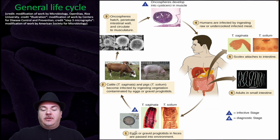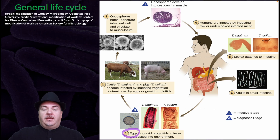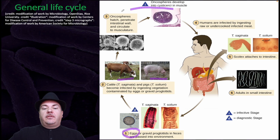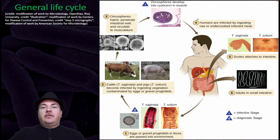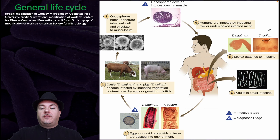Here's an example of a general life cycle. Released in the feces, you can have eggs. These eggs then infect the intermediate or secondary host, such as cows or pigs. In these intermediate hosts, you have development of the larval stages. Then you have infection of the definitive or final host — in this case humans — by ingesting raw or undercooked infected meat. In this definitive host, you have development into adulthood and reproduction.